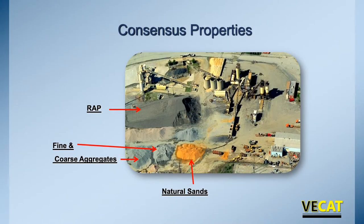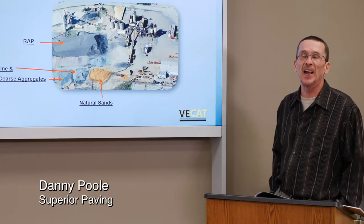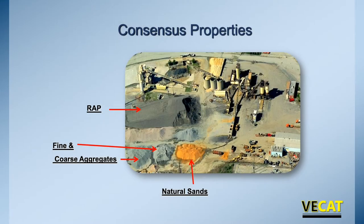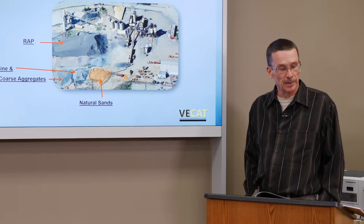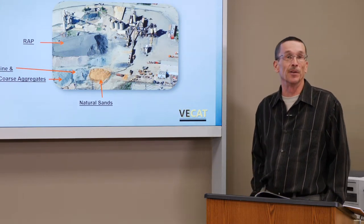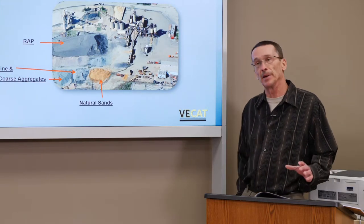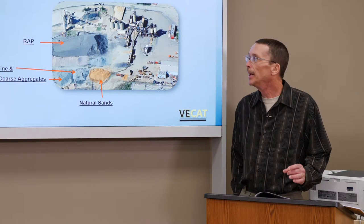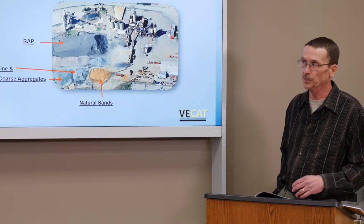Now we're going to shift into talking about consensus properties. Danny Poole from Superior Asphalt Paving will make that next presentation. My name is Danny Poole; I'm with Superior Paving, and I'm going to pick up on the consensus properties. Consensus properties are the aggregate properties that asphalt producers test. They include sand equivalency, fine and coarse aggregate angularity, and flat and elongated particles. Typically these properties are run on individual aggregates used for the mix design; however, it is the blended values that govern the results, allowing an individual aggregate that may fail one criteria to still be incorporated into a design.